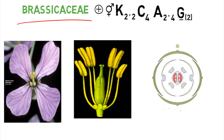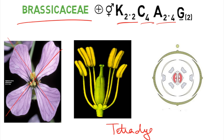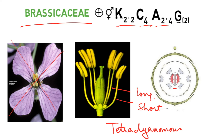Last is Brassicaceae, the mustard family. The flower is actinomorphic and bisexual. The calyx has four sepals arranged in two whorls of two plus two. The corolla has four petals. The androecium has six stamens in a two plus four arrangement — the tetradynamous condition — where two outer stamens are short and four inner stamens are long. The gynoecium has two united carpels with a superior ovary. Tetramerous condition and tetradynamous stamens help us recognize family Brassicaceae.